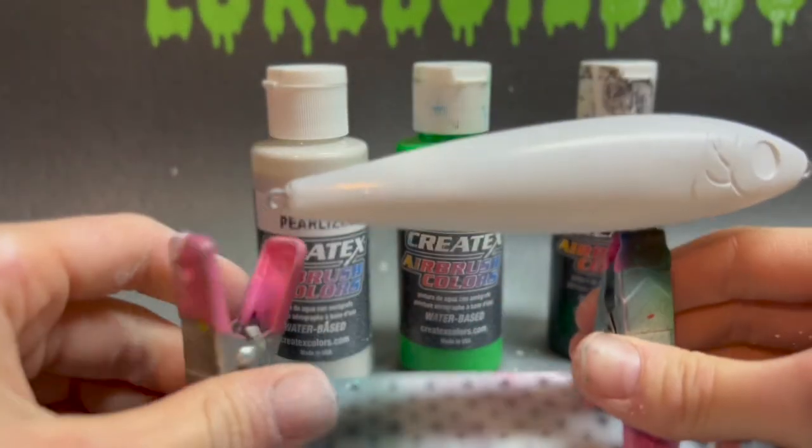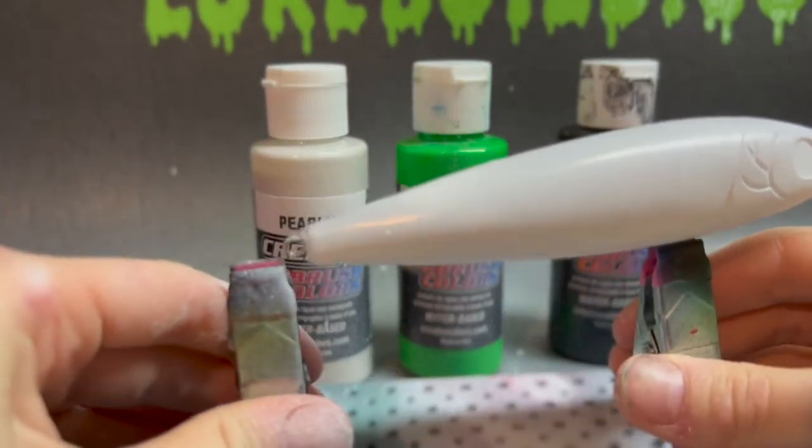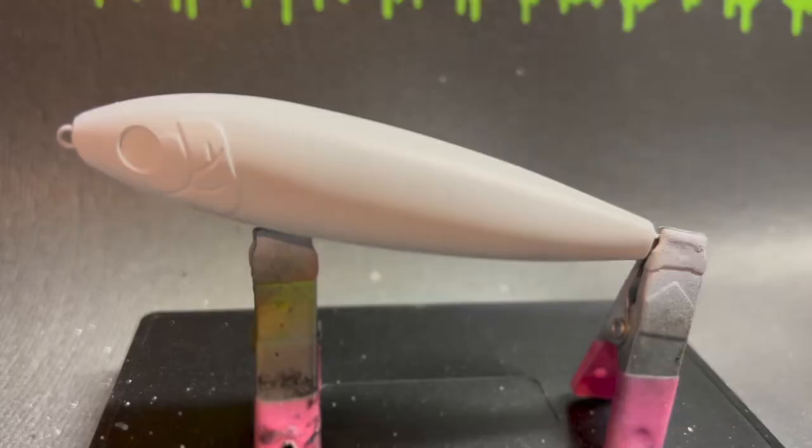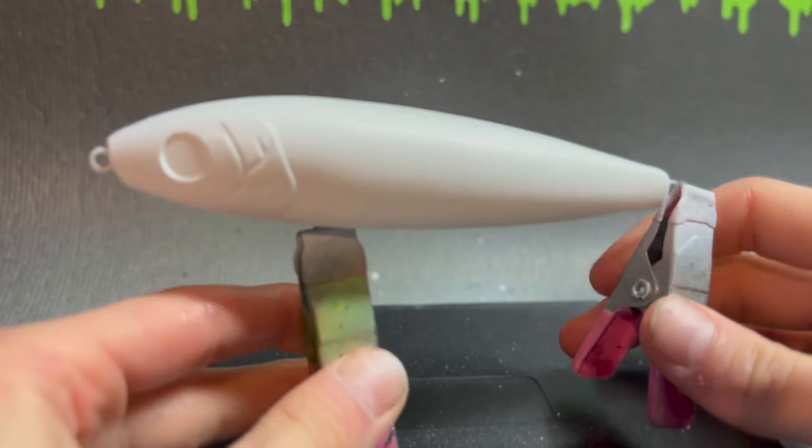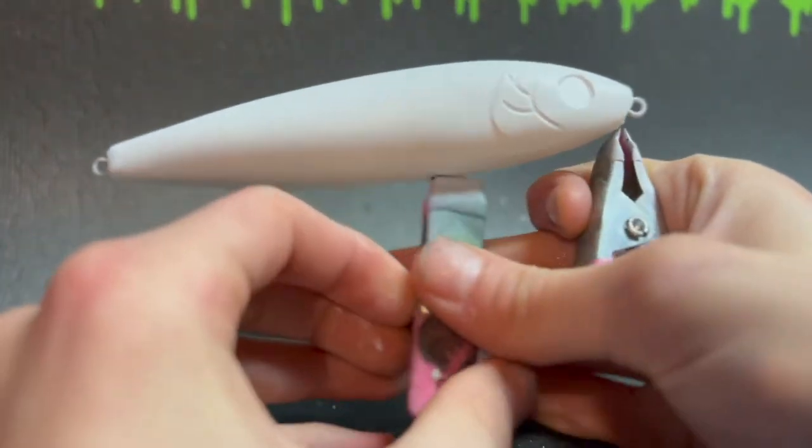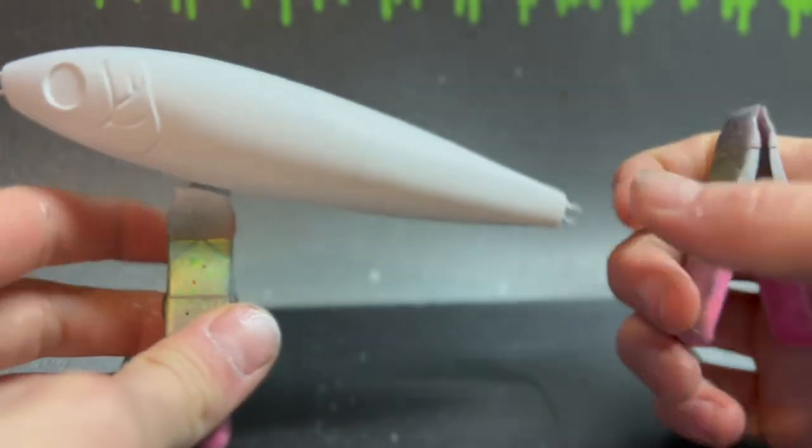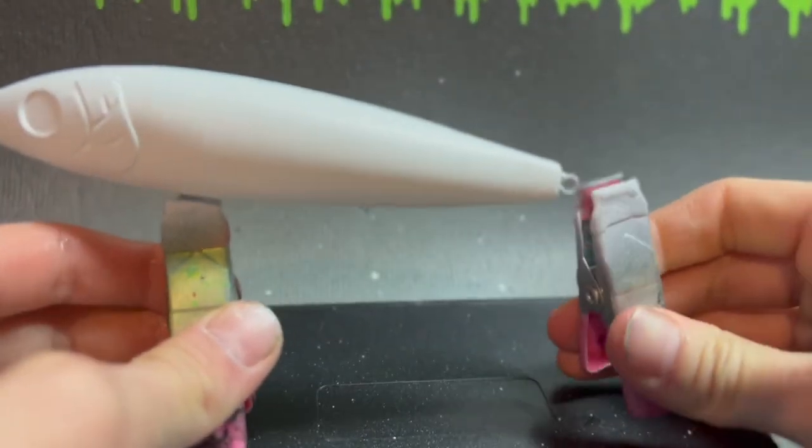We're going to heat set this and we will be going to the next color. Okay guys so we got our base coat of white right here. And by the way I'm using a spook from lure build blanks.